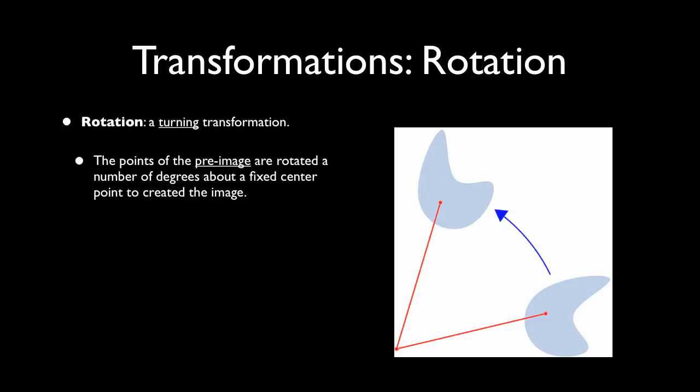they rotate the preimage a fixed number of degrees about some center point. So when you define a rotation, you need that center point, which is that red dot in the bottom left, the amount of rotation, in other words, the degree measure, and then the direction, either clockwise or counterclockwise.